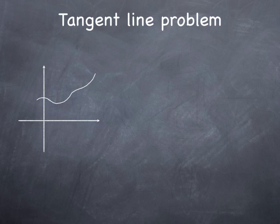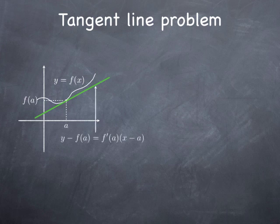In the case that we've looked at so far, that is the case of the tangent line to the graph of a function: if we have a function and its graph and we pick a point on that graph with coordinates (a, f(a)), and we consider the tangent line to the graph at that point, then we know how to obtain its equation. This line has slope f'(a), where f' is the derivative of f, and therefore the equation is given by y - f(a) = f'(a) · (x - a).